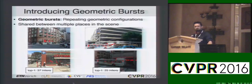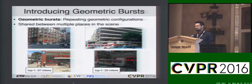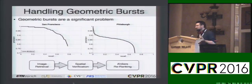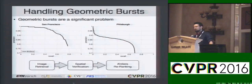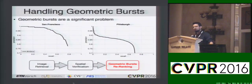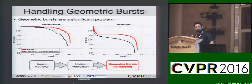Some of you may be wondering whether this is really that much of a problem, or whether these are just corner cases. It turns out that geometric bursts are a significant problem. What we propose in this paper is to not look at the number of inliers to make decisions, but to explicitly handle geometric bursts. Simply by doing so, without actually changing anything else in the pipeline, we get a really significant improvement in performance, especially for high precision.